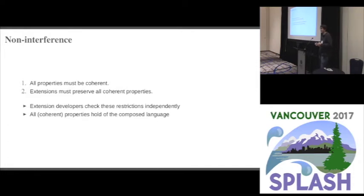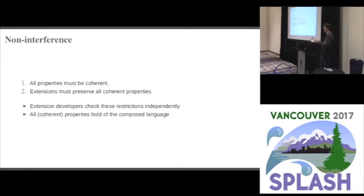Restriction two is that your extensions must preserve all coherent properties. If you're only relying on coherent properties, those coherent properties will be preserved under composition — they'll still be true of the final composition. That's the general idea of how we achieve non-interference.